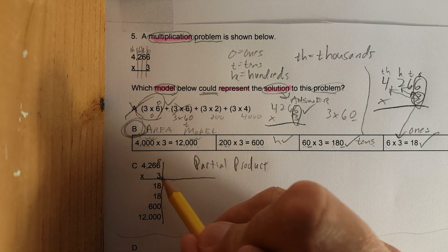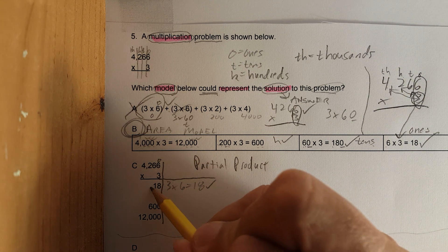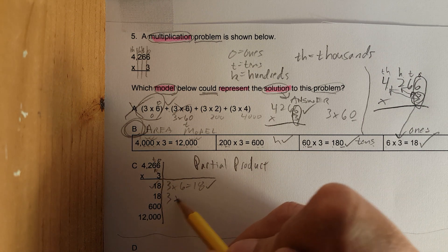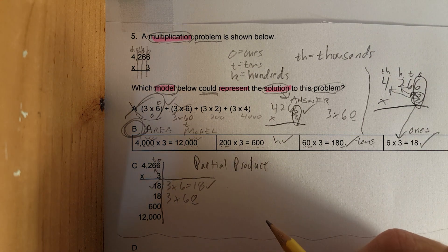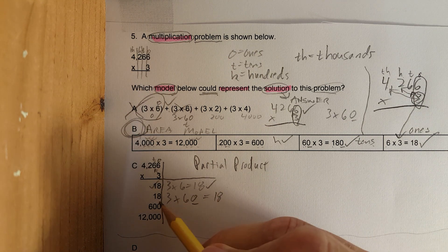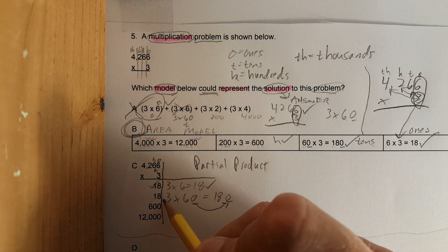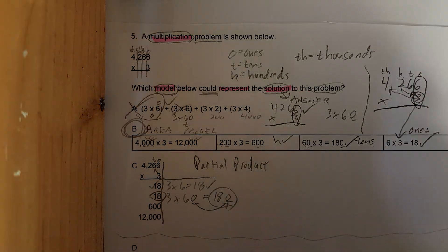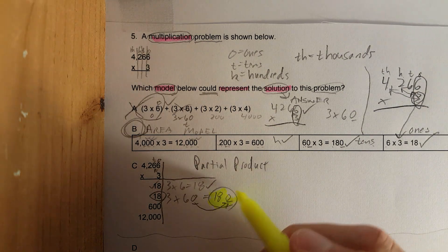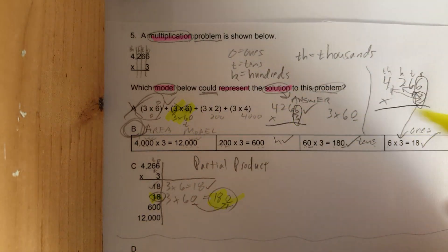First we're going to do the ones. Three times six is eighteen. Check, check, check. Let's go to the tens. Three times sixty - notice that zero there. Three times six is eighteen. Oh wait, don't forget the zero. So right away this is a mistake. Let's make sure that pops out. Mistake, mistake. Look at this one - error, mistake.